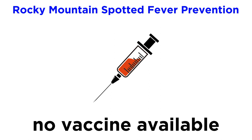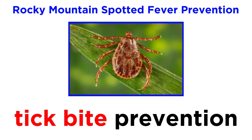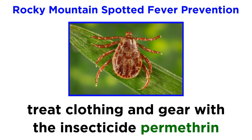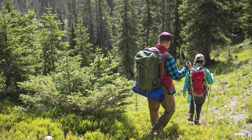Since there's no vaccine for this disease, prevention is usually centered around preventing tick bites. Educating yourself about where ticks normally hang out and what different kinds of ticks look like, as well as treating your clothing and gear with the insecticide permethrin, can be helpful for prevention. If you're the hiking type, always check your body and clothing, as well as any pets that come along, for any ticks after an outdoor excursion.